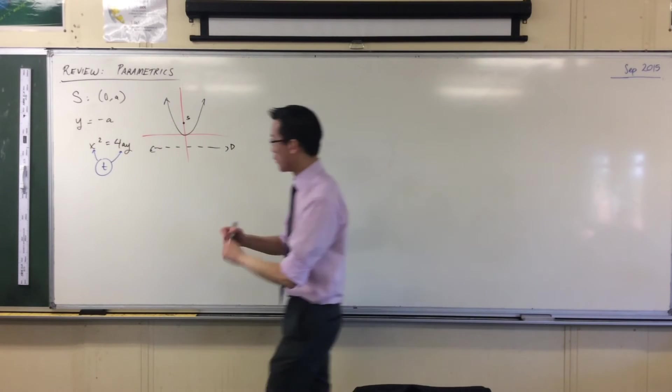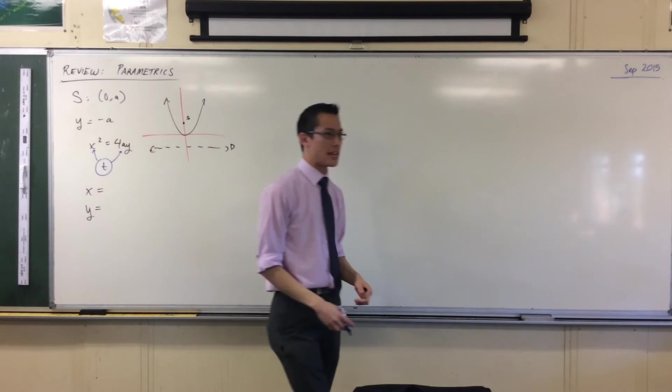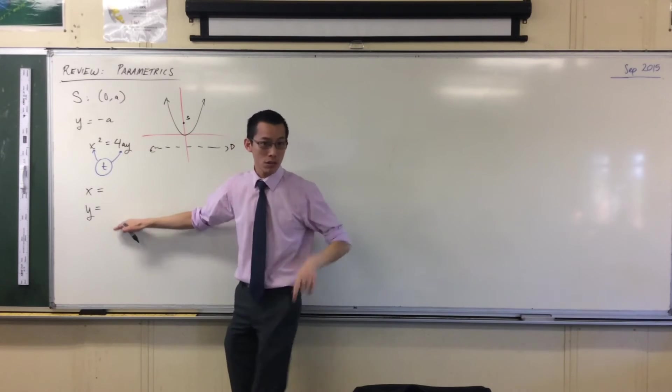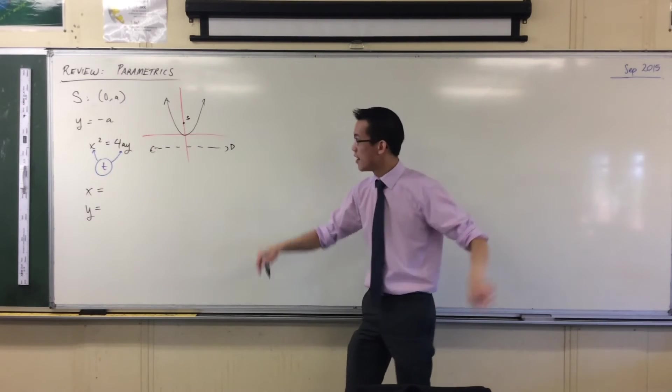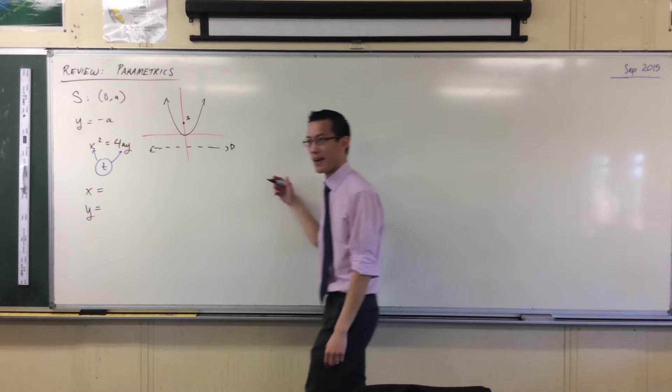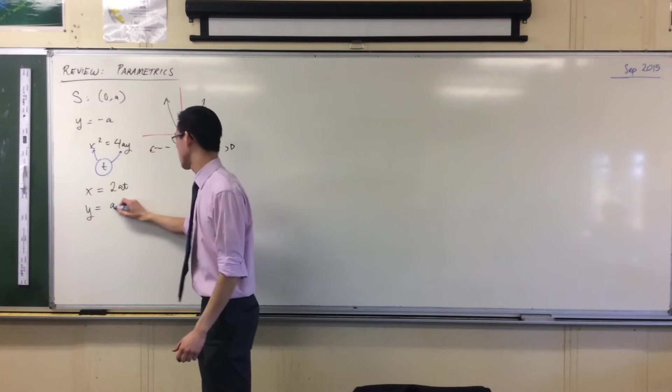So therefore we introduced these parametric equations, linking each of the two variables we're used to talking to the third variable. For our classic parabola, what are our definitions for x and y? 2at and at squared, very good.